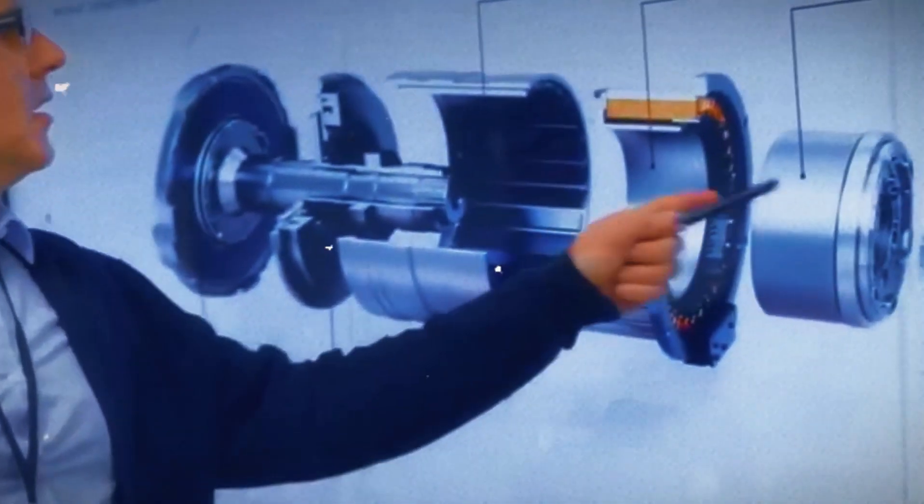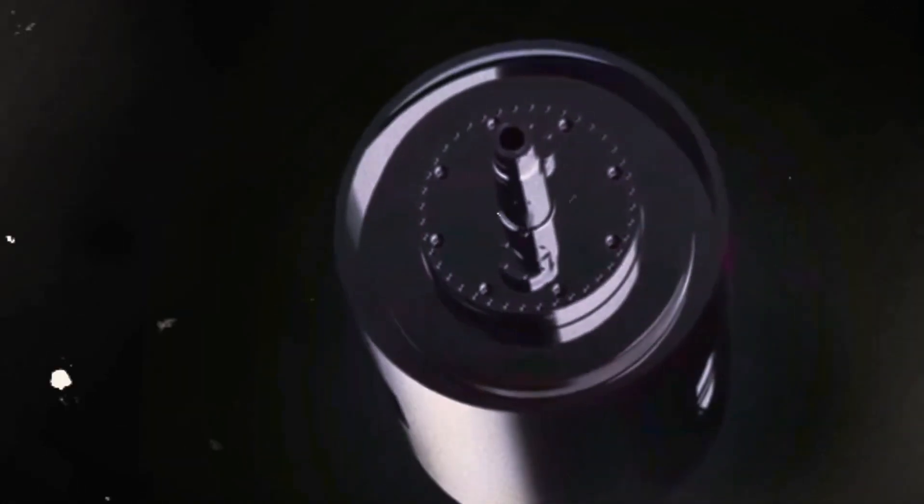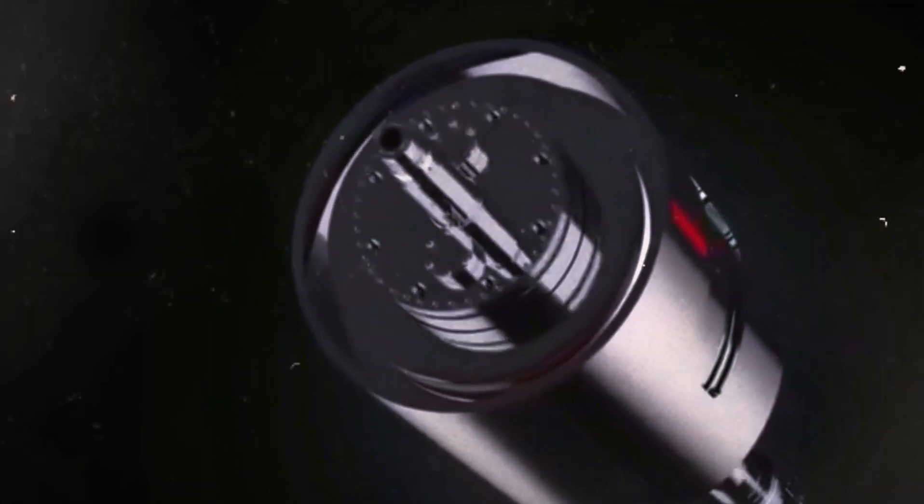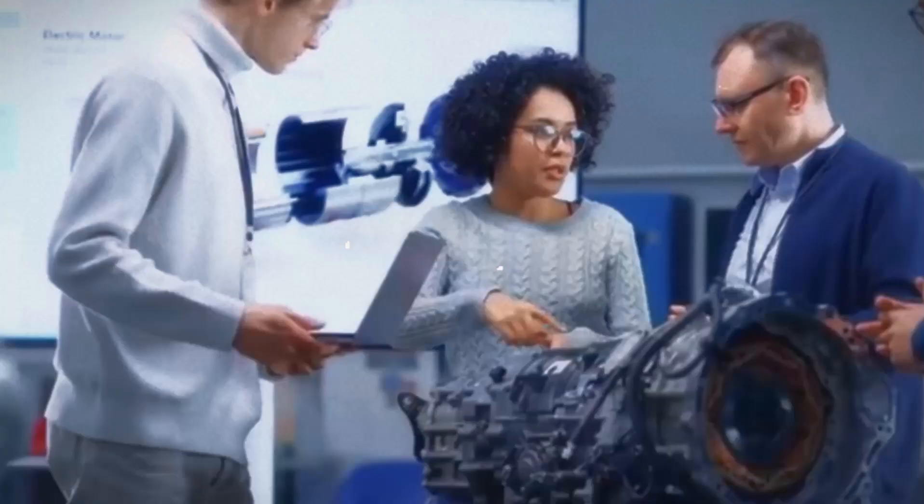Radial flux motors, shaped like donuts with a coiled wire stator around a central rotor, are efficient but bulky. Axial flux motors, however, offer a more compact design by having the magnetic force flow parallel to the spin, like a record player.